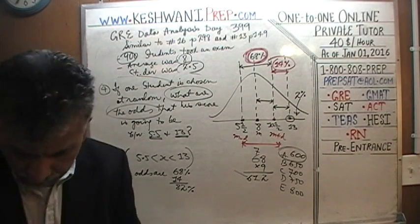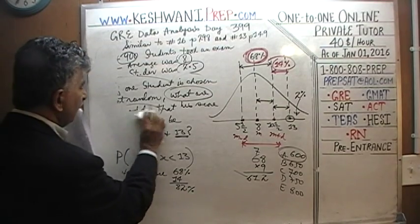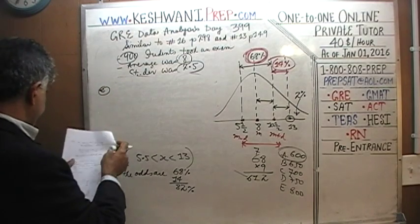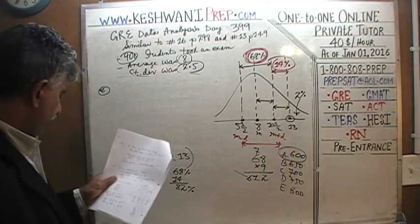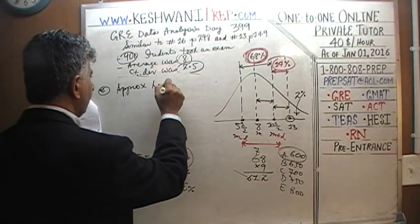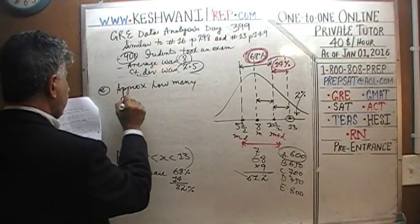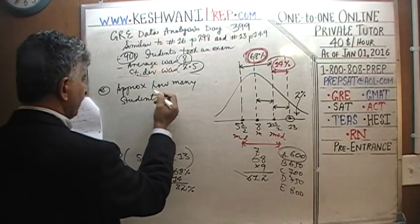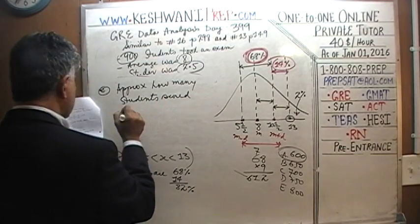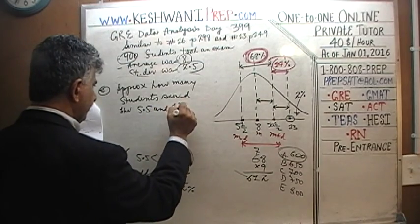Part E: approximately how many students scored between 5.5 and 13? This is similar to Part D. We already know that 82% of students score between 5.5 and 13, so now we need to find 82% of 900.